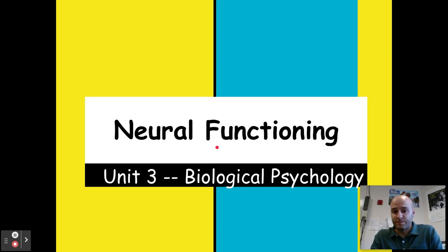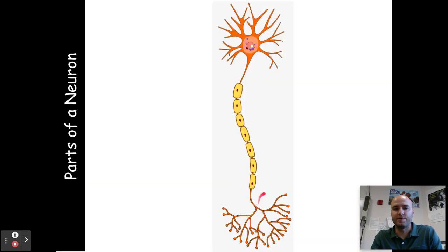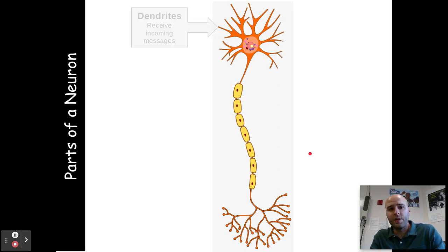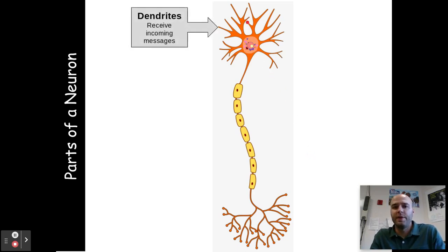Our first section is all about the neuron and neural functioning in our brain and how that works. To break things down first, we're going to go through the parts of a neuron. We'll be responsible for understanding what each part of the neuron does and how it communicates with other neurons in the central nervous system and peripheral nervous system. At the top, these little branches, we have dendrites.